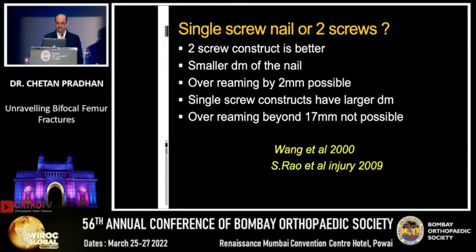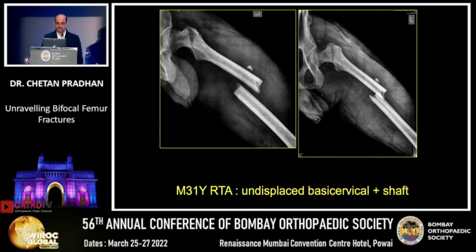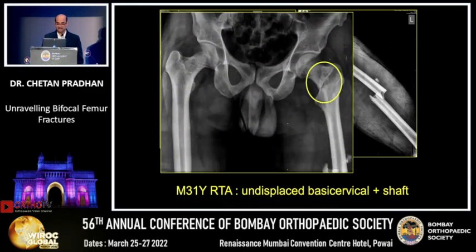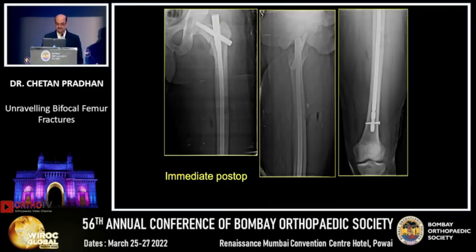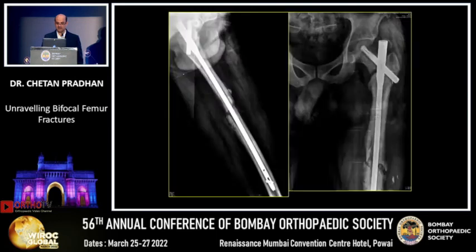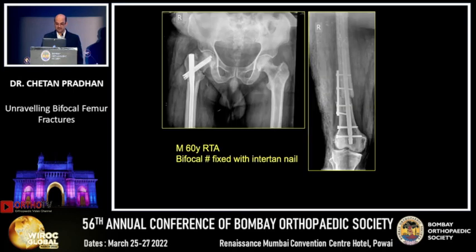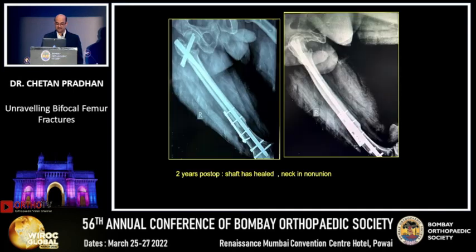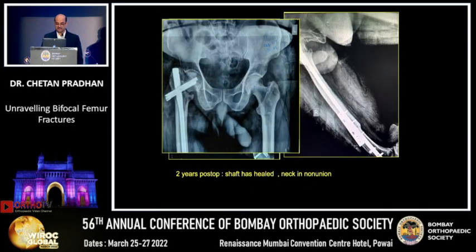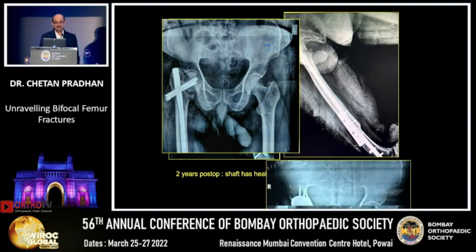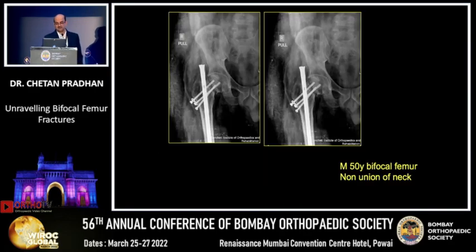If you use a single implant assembly — here is an example of an undisplaced neck — while using a single screw assembly, the neck got displaced because of the larger implant and went into a non-union. Another example where the same thing happened: the shaft healed but the neck went into a non-union and had to be revised.